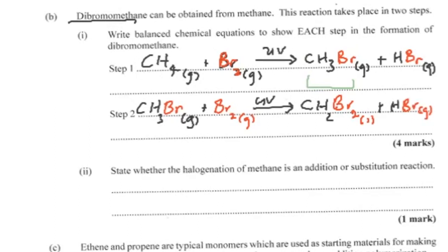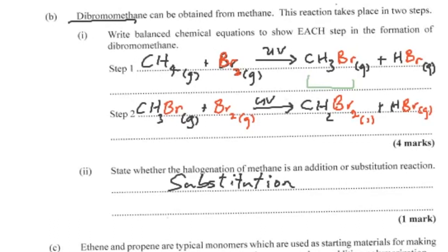The question asks whether the halogenation of methane is an addition or substitution reaction. Alkanes are not as reactive as alkenes, so this is a substitution reaction — specifically, free radical substitution. Get familiar with that term.